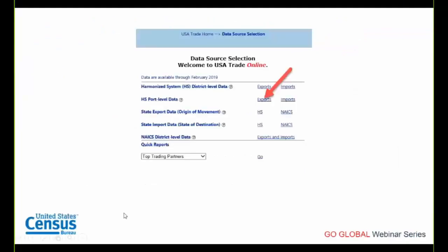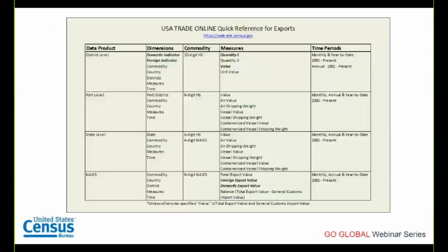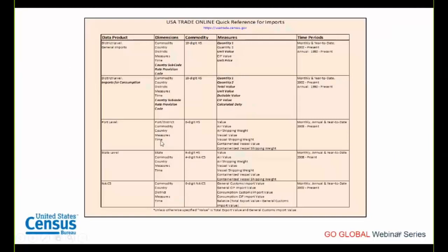A quick reference for USA Trade Online: for exports, the HS district level is the only dataset with 10-digit HS codes; port and state level have data by method of transportation; NAICS has trade balance data. For imports, the district level has additional detail like statistics by rate provision and country subcode, plus additional measures like CIF value, calculated duty, and dutiable value. The other datasets are similar to the export side with some differences in time period at the state level.